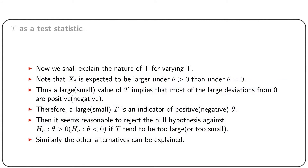We shall explain the nature of T for varying theta. Suppose theta > 0. Then xi are expected to be larger under theta > 0 than under theta = 0. Most of the zi's are expected to be larger in such a case, and thus we get a large T. Therefore, a large T is an indicator of a positive theta. It seems reasonable to reject the null hypothesis against theta > 0 if T tends to be too large. In a similar fashion, the other alternatives can be explained.